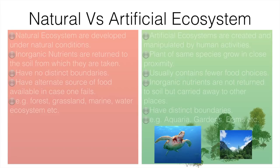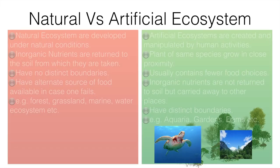Natural ecosystems don't have distinct boundaries — they are interdependent with no fixed separation. In contrast, artificial ecosystems have fixed boundaries; for example, a garden has clearly defined limits. Natural ecosystems also have alternate sources of food — if one food source is lacking, organisms can depend on another.